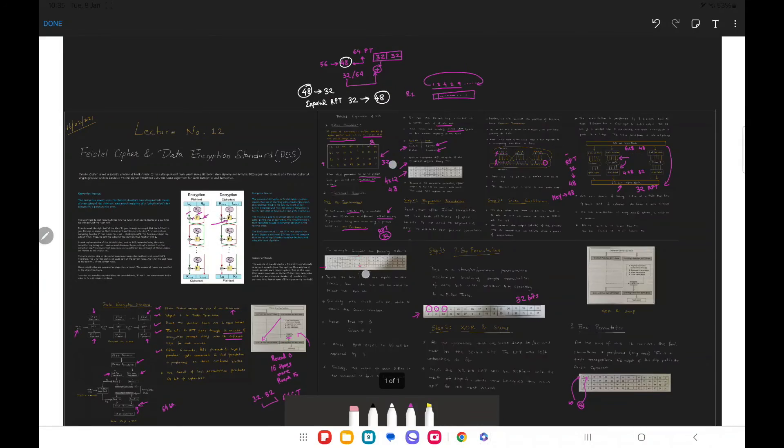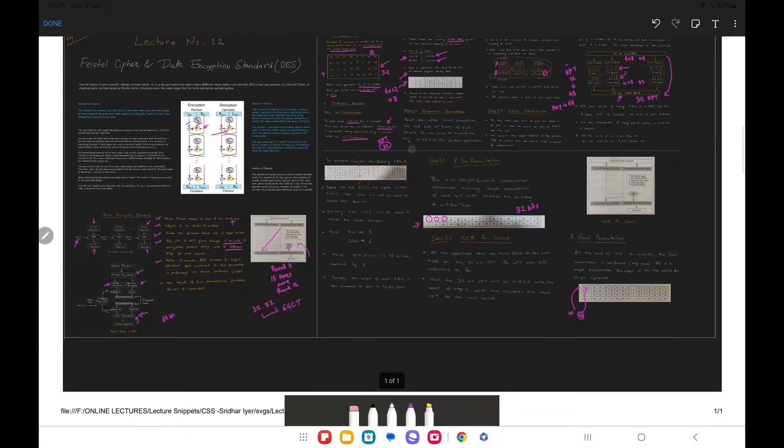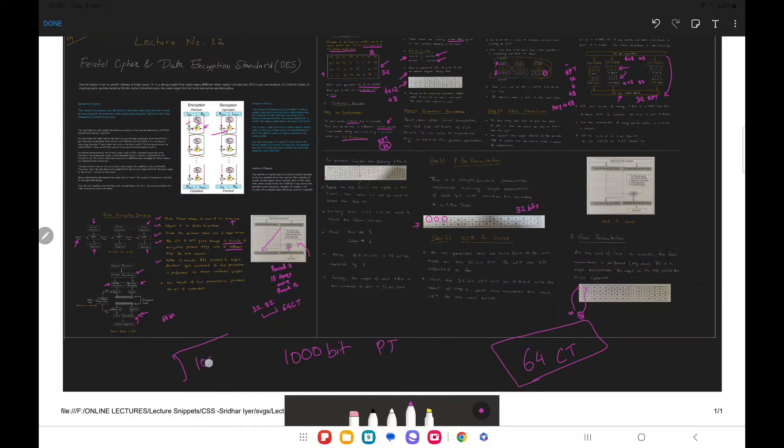So after all those efforts we are going to get a 64-bit output that is a 64-bit ciphertext for the first block of the plain text. So in short if you are having a thousand bit plain text we are going to divide that by 64 and those many number of blocks we are going to require for the encryption. So you can just imagine how many times this particular process will go on and on.